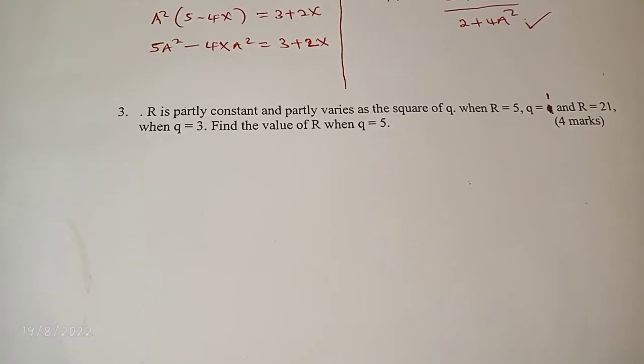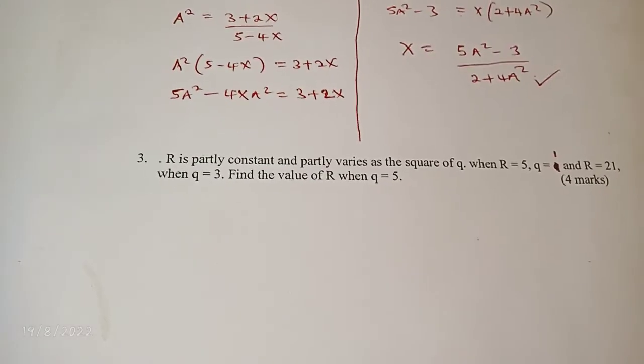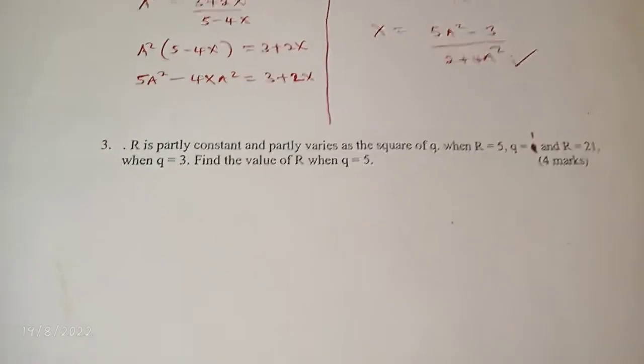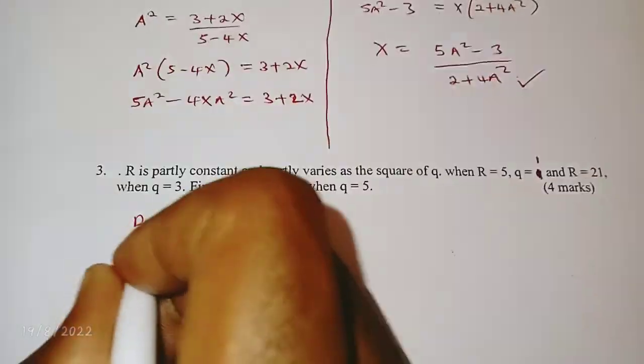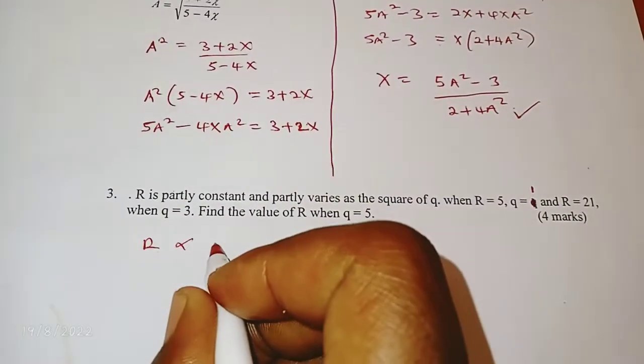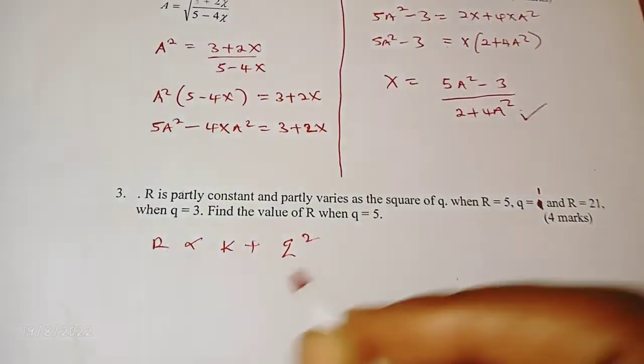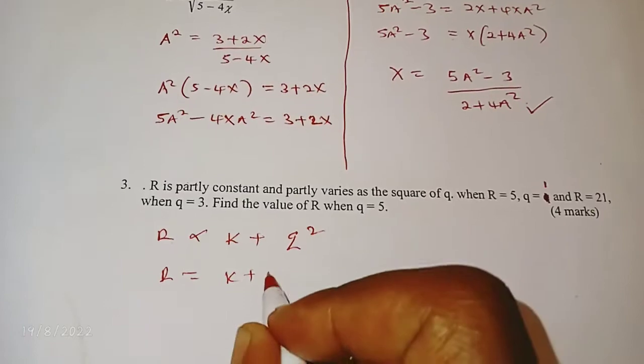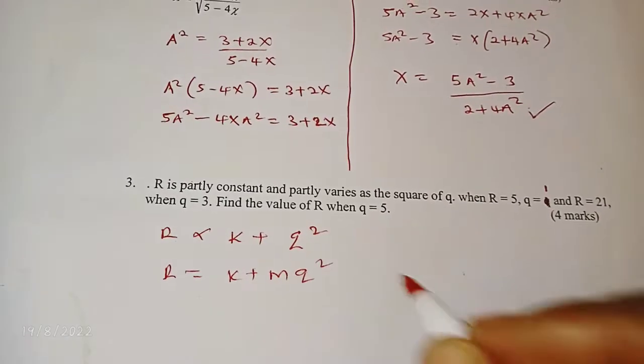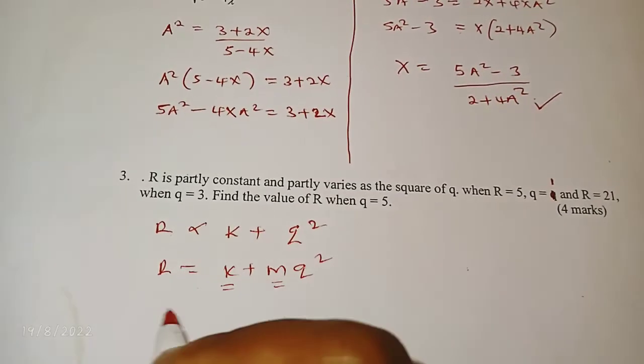Let's go to the third part quickly. R is partly constant and partly varies as the square of q. When r equals 5, q equals 1, and r equals 21 when q equals 3. Find the value of r when q is 5. So we are told that r varies partly as a constant and partly as q squared. So this means that if we remove the proportional sign, we are going to have that, and we introduce two constants, that is k and m.